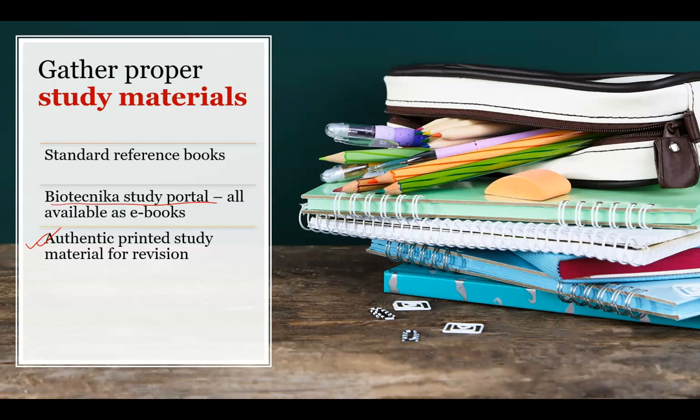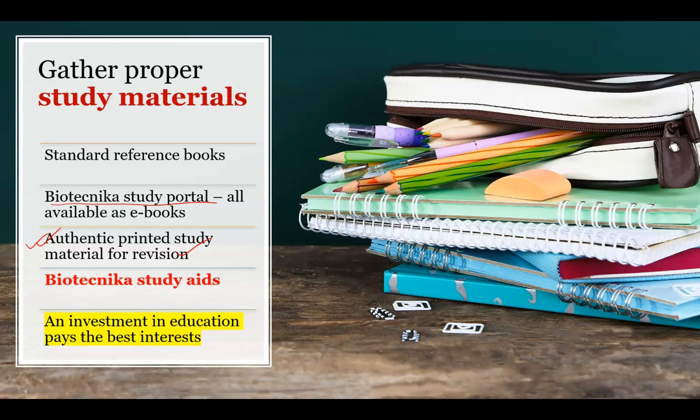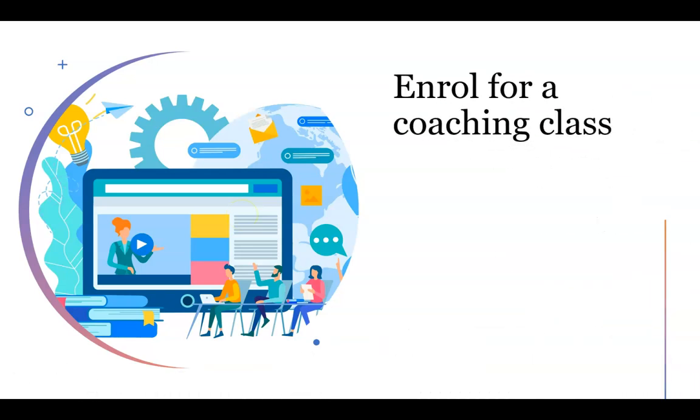You also need authentic printed study material for revision from an organization with an excellent track record. This printed material is not the first step — you should study from classes or standard reference books first, as going through books alone takes much more time. Classes help you get key points and important topics quickly. After that, for revision, you can refer to Biotechnica's printed study aids which come in tabular form, wheel form, and flow chart form — very helpful for preparation and an investment in your bright career.